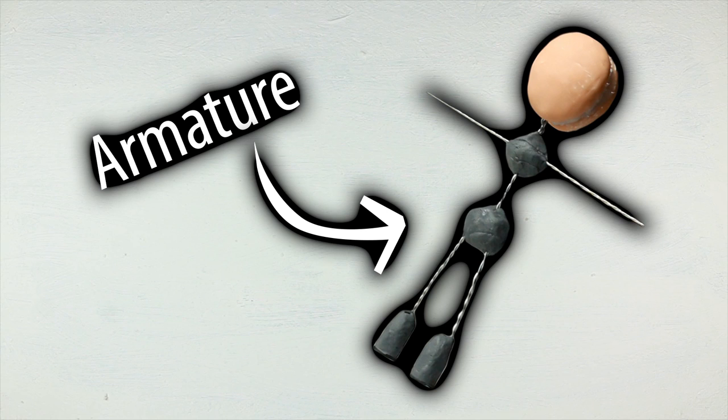So this first episode will focus on making the skeleton or armature, which is really the only reason the puppet can move and hold its position at all. Without it, it would just be another flip floppy plushie. So let's start.